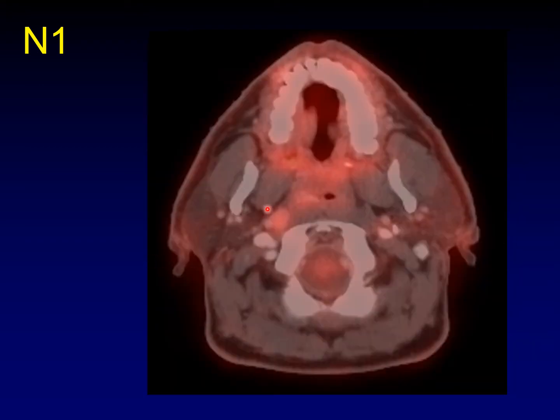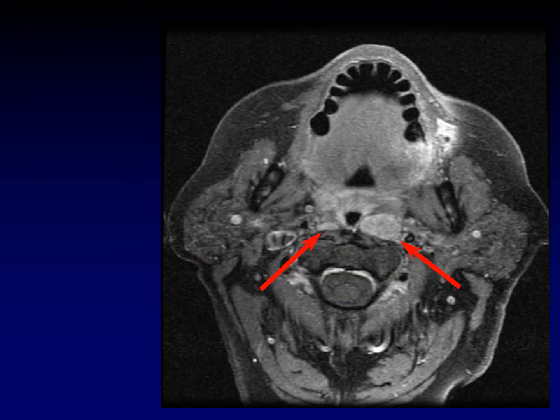What about this one? Even if the primary tumor is on the left, this is a retropharyngeal lymph node, so it's always going to be N1 disease regardless of which side the primary tumor is on. Here's another example — bilateral retropharyngeal lymphadenopathy. So we've got bilateral disease, but retropharyngeal nodes are the exception — still N1 disease.